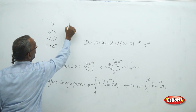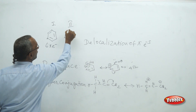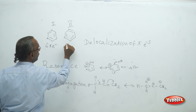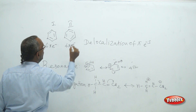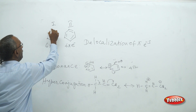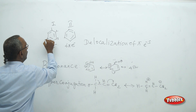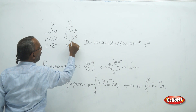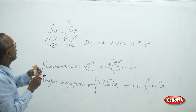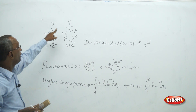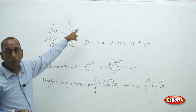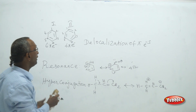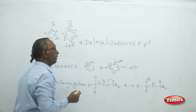Structure one and structure two of benzene both contain six pi electrons. Between the first and second carbon atom, there is a single bond in one structure but a double bond in the other. This means pi electrons are getting delocalized — this delocalization phenomenon is called resonance. Delocalization of pi electrons or unpaired electrons are involved in resonance.